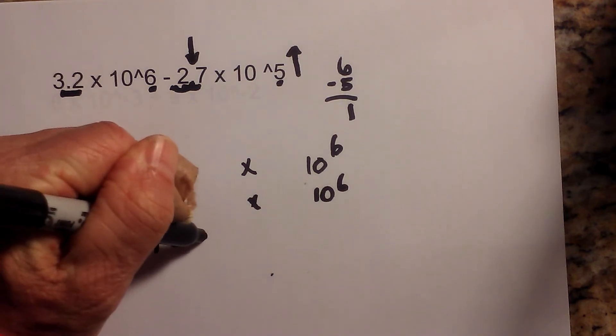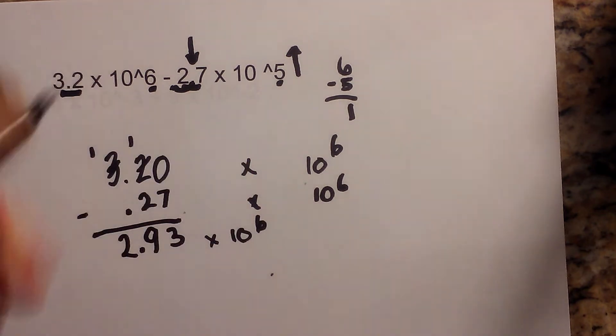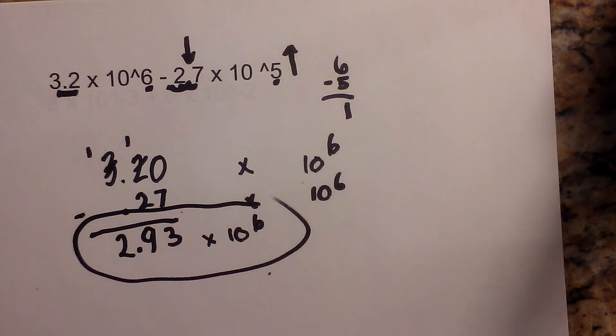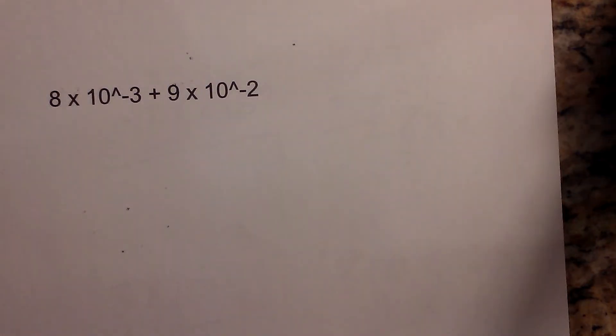So 2.93 times 10 to the 6. Okay, and I'll circle my answer. Okay, let's work one other example.